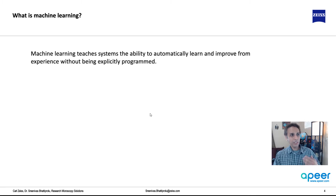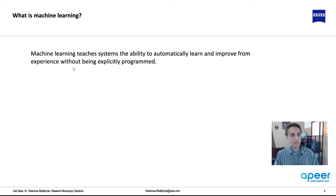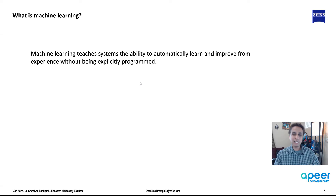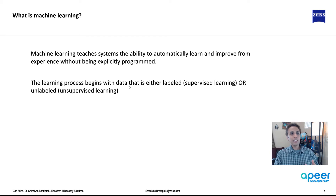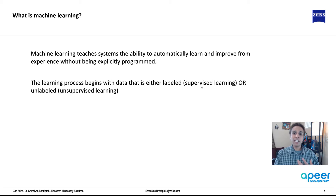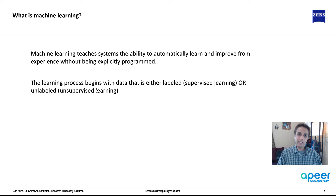When it comes to machine learning, it teaches systems the ability to automatically learn and improve from experience without being explicitly programmed. They have the ability to automatically learn and improve from experience — give more data from experience, they improve. Machine learning begins with data that's either labeled — we say this is a tennis ball, this is a table tennis ball, this is a basketball — that's called supervised learning, where someone is supervising and telling it what each thing is.